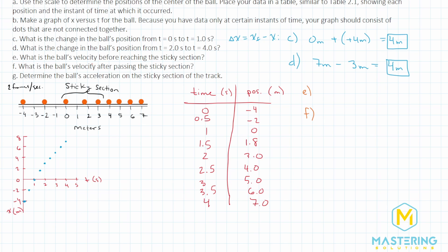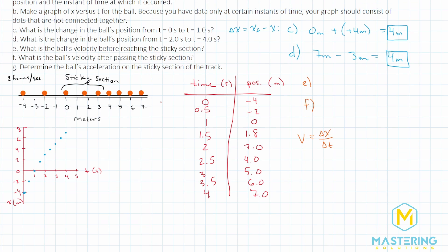For parts E and F, they want us to find the ball's velocity before and after the sticky section. The formula for velocity is change in distance over change in time. The sticky section starts at zero meters, which is the one-second mark. So we find the velocity from zero to one second: the change in distance was four meters, and the time was one second. Four meters divided by one second gives a velocity of four meters per second. That's the answer for part E.